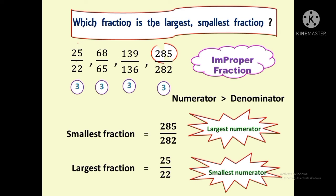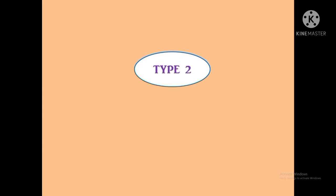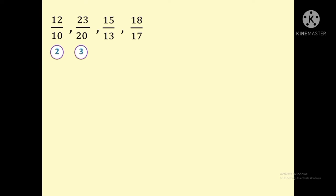Now we are going to see Type 2. In Type 2, the difference between the numerator and denominator is not the same. Here are some fractions: 12 by 10, 23 by 20, 15 by 13, and 18 by 17. These fractions are all improper. The differences between the numerator and denominator are 2, 3, 2, and 1 respectively — the differences are not the same.